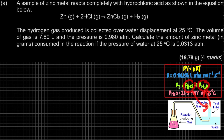Based on the question, the gas produced is hydrogen gas. Zinc chloride is a solid, so the gas of interest is H₂. Now I'm going to extract all the information from the question: temperature, volume, and pressure. The pressure given is 0.98 atm — this is the total pressure.